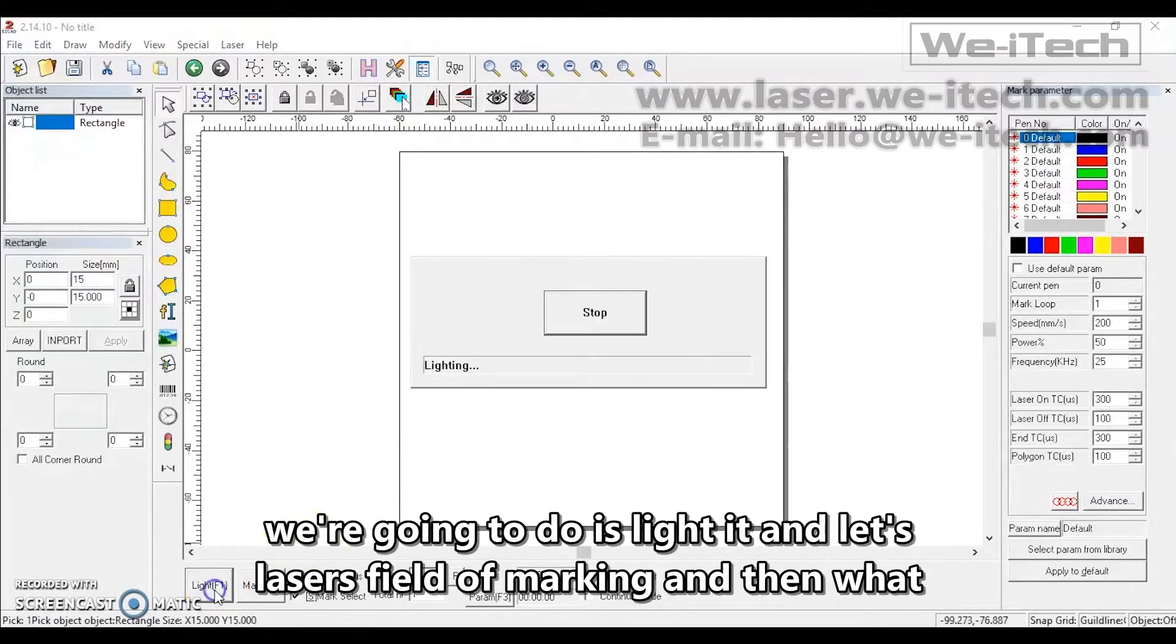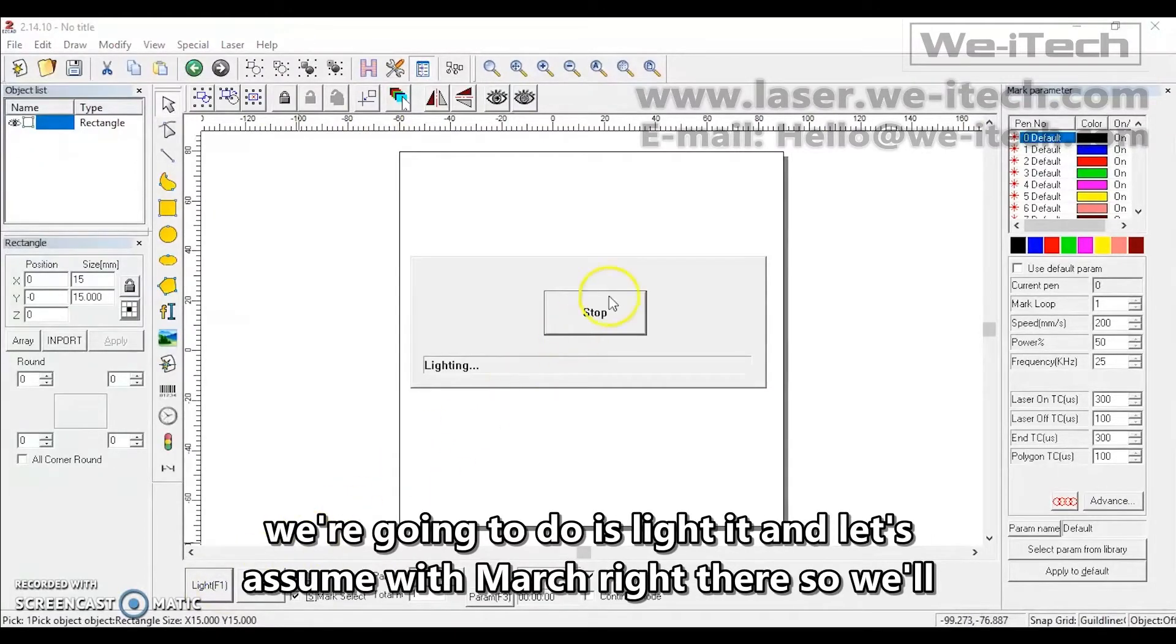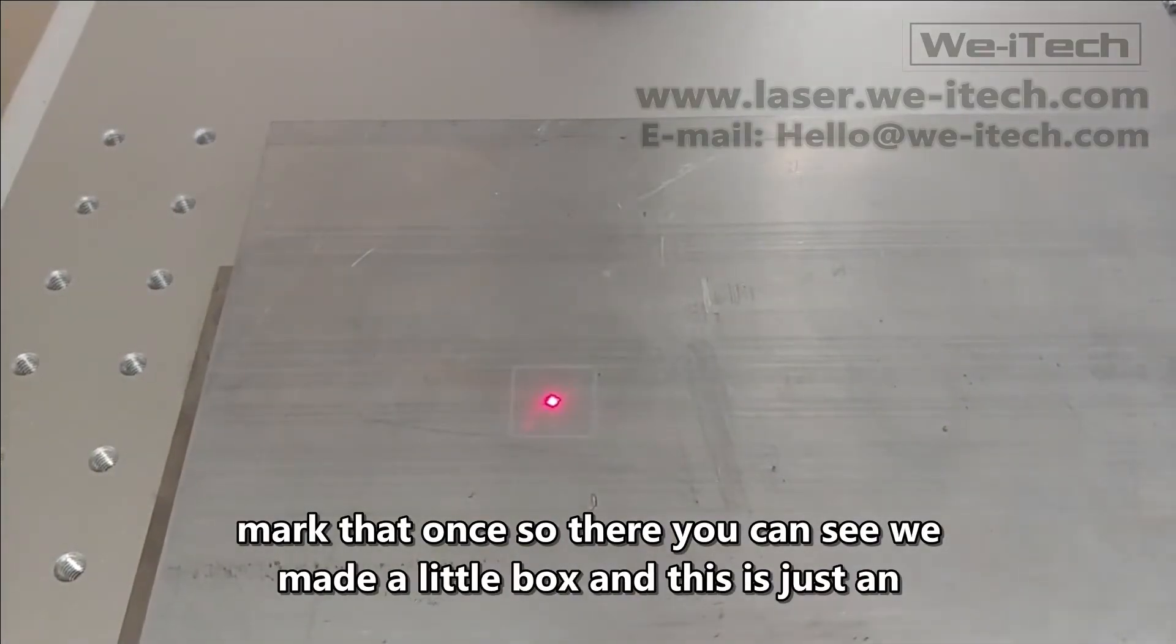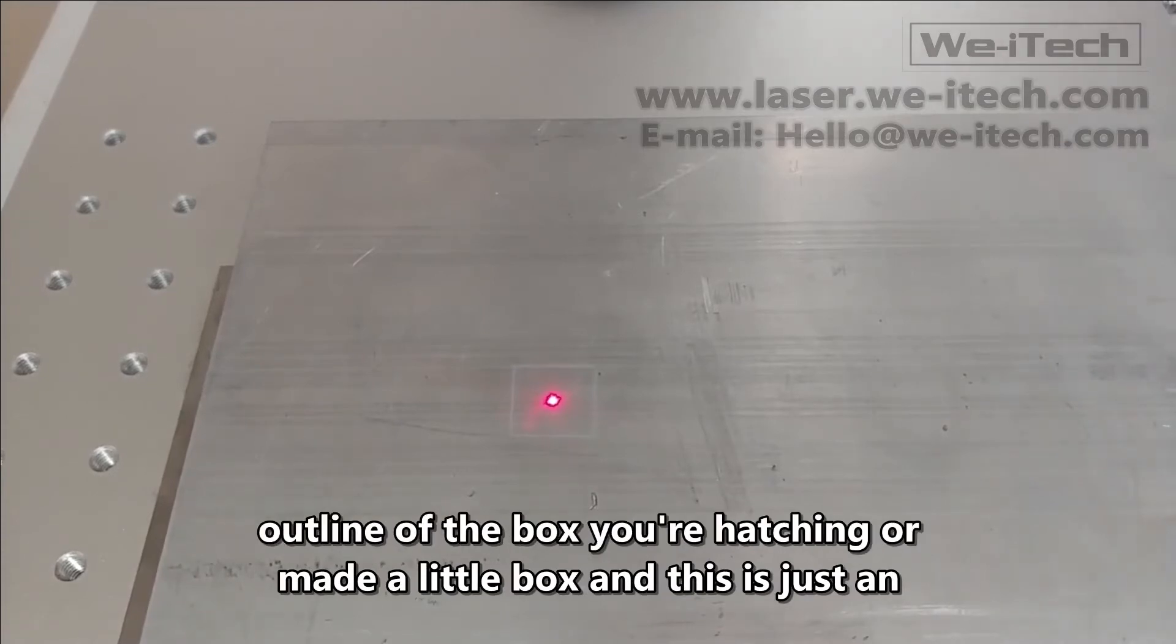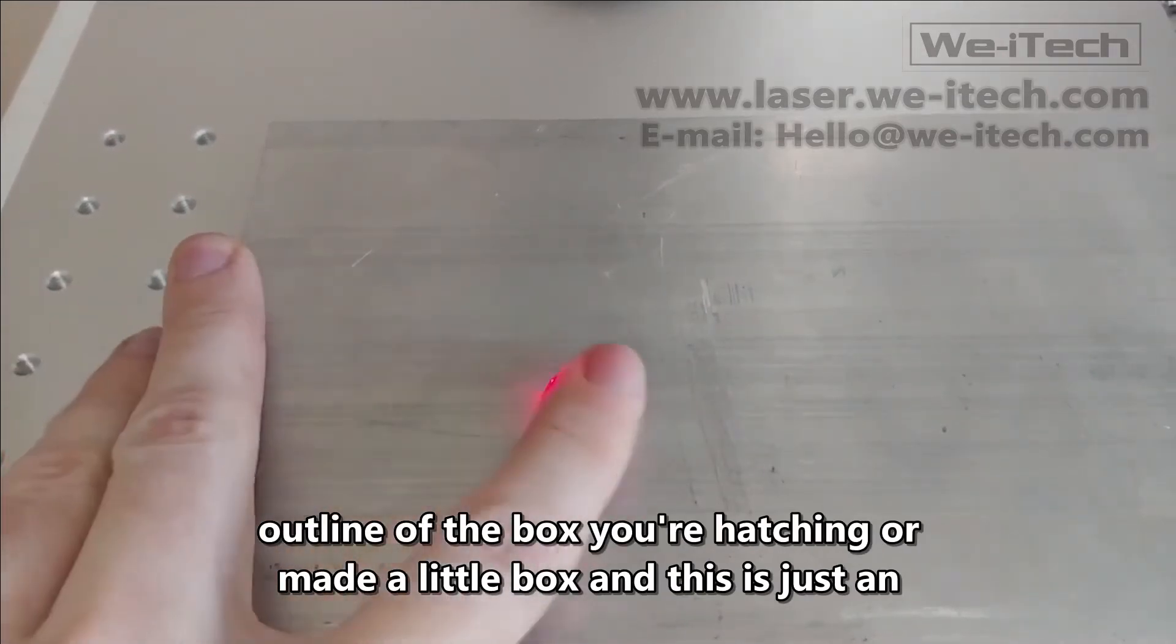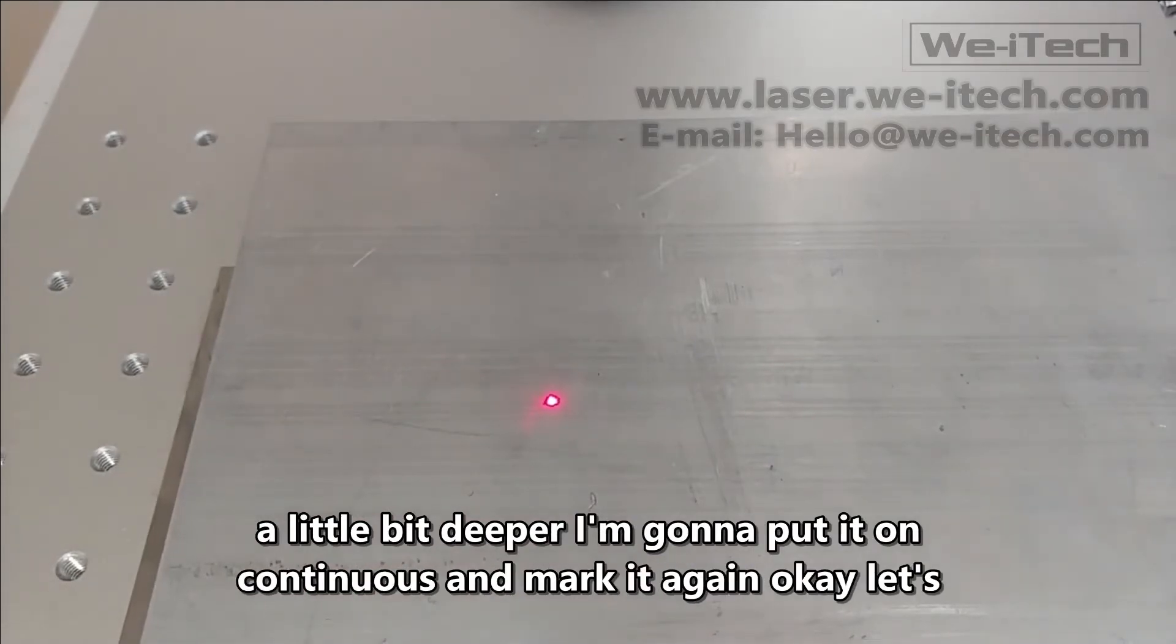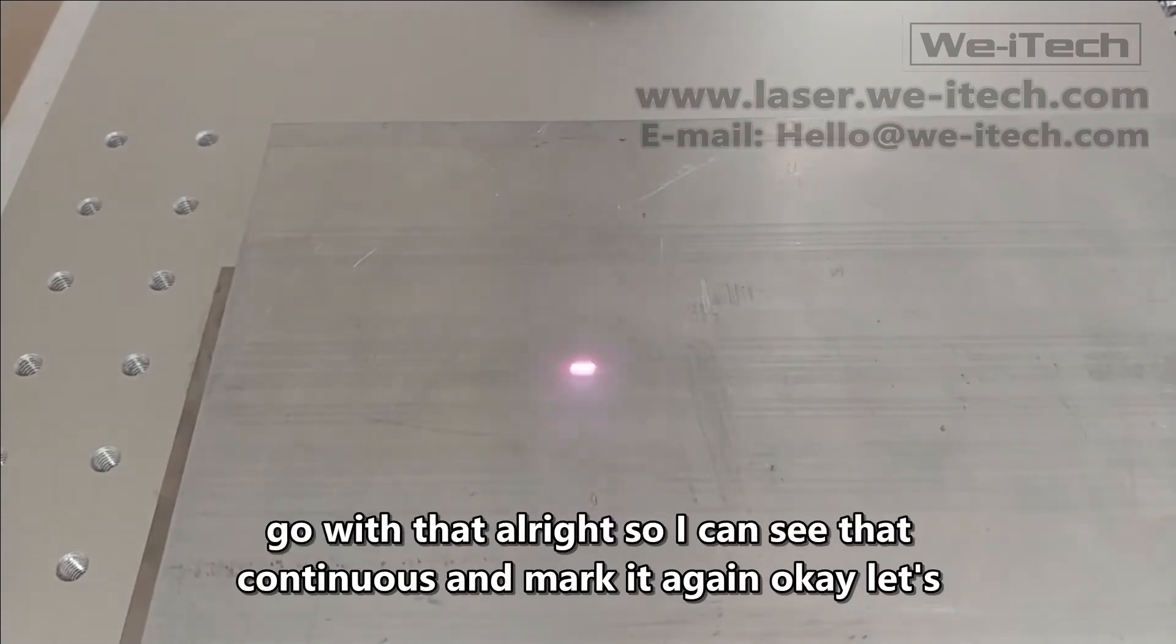So that should be roughly at the center of our laser's field of marking. And then what we're going to do is light it, and let's assume it marks right there. So we'll mark that once. So there you can see we made a little box, and this is just an outline of the box. No hatching or anything like that, and I better do that a little bit deeper. I'm going to put it on continuous and mark it again.